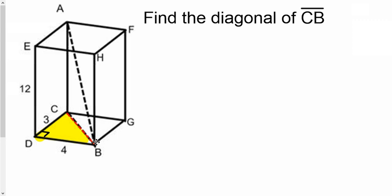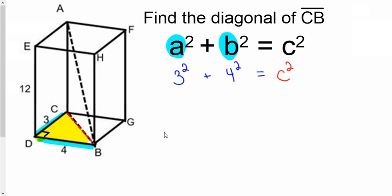So it's a right triangle that we're looking at. And we use Pythagorean Theorem. We take a look at the legs, which are 3 and 4. Plug that in. And then we could go and solve for C, which in this case is CB.